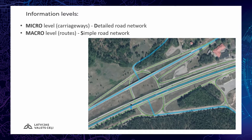As you can see in this picture, there is a difference between two information levels: micro and macro. Micro means the detailed road network where all carriageways are included. Macro level is only for the routes — it's a simplified road network.